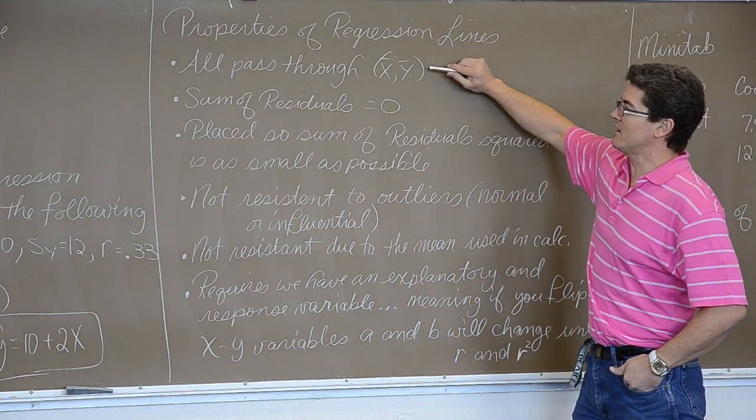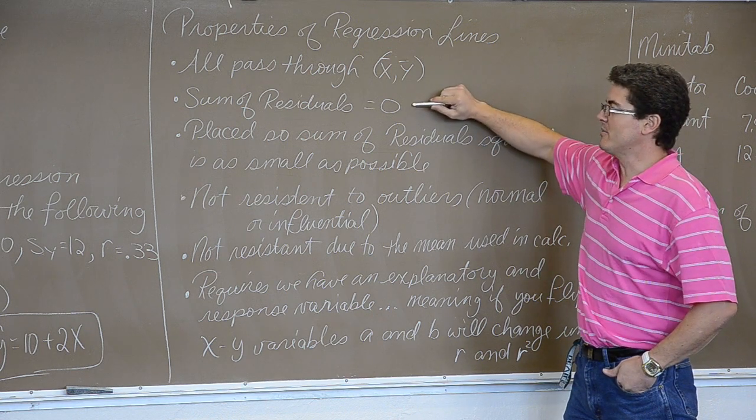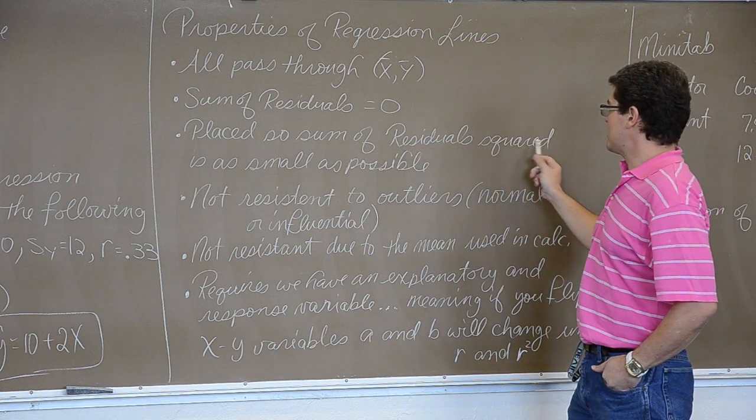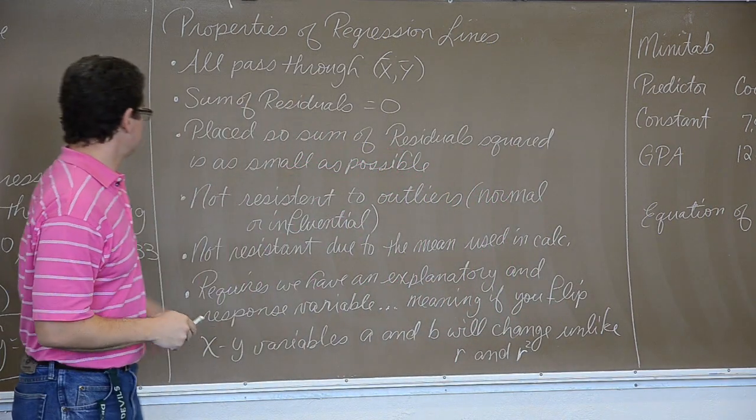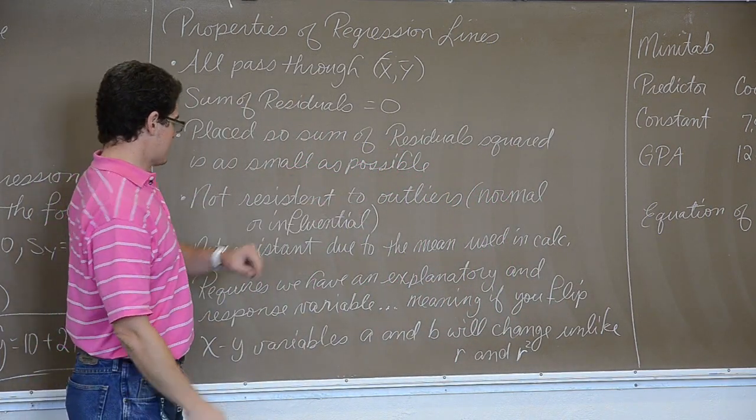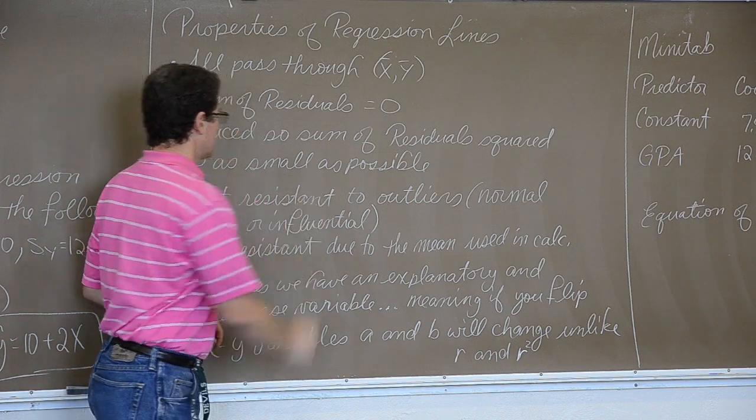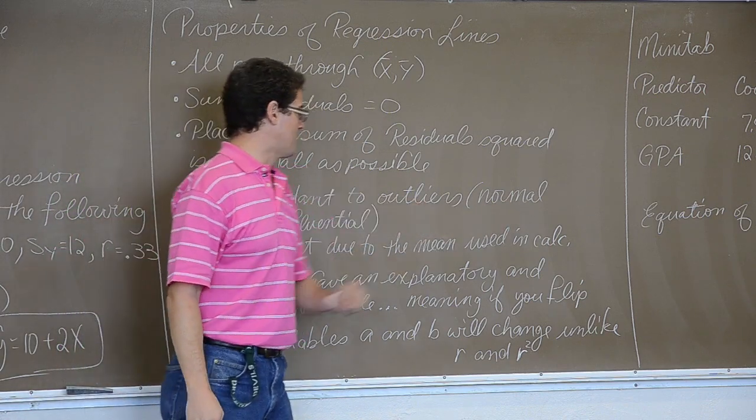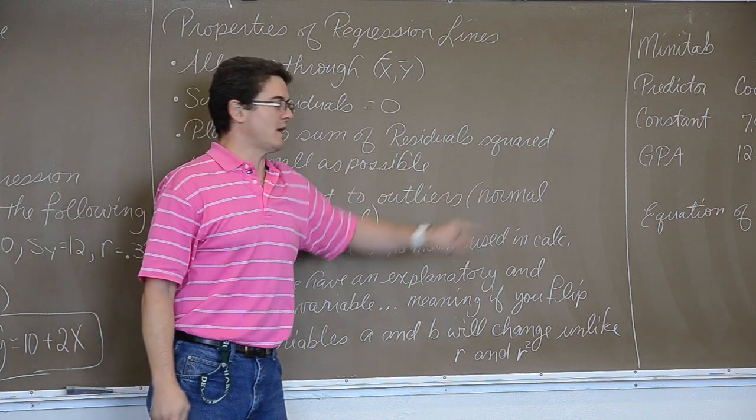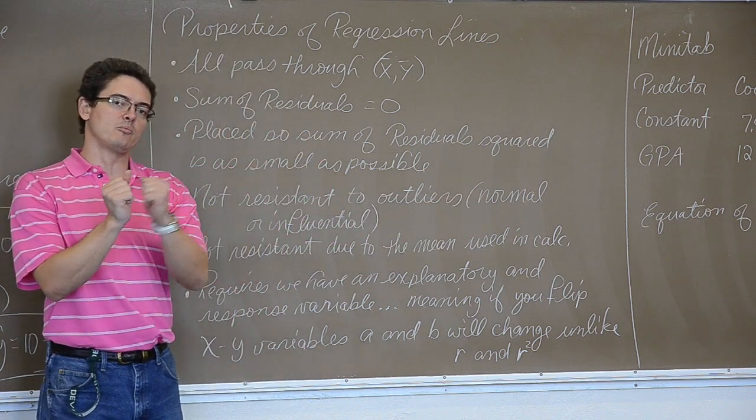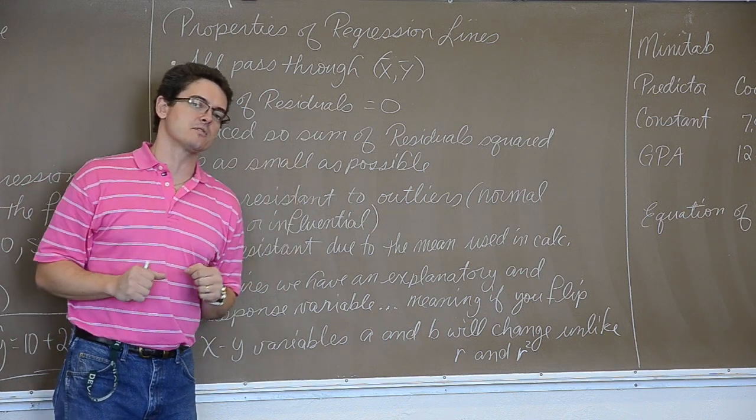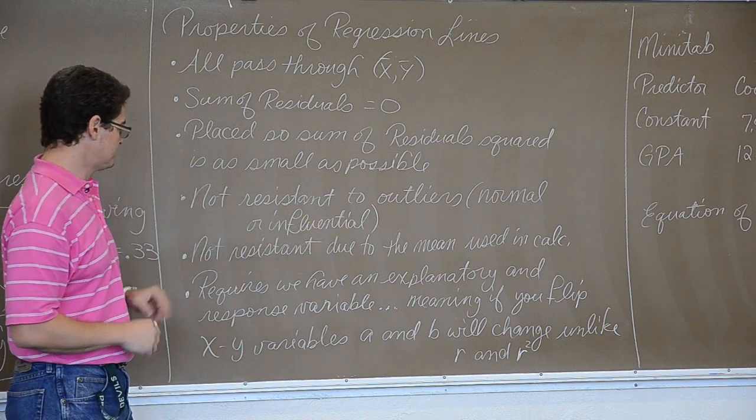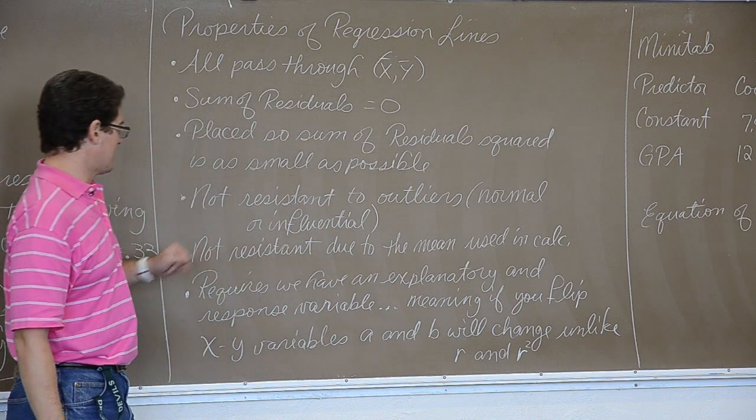Properties of regression lines, one more time, they all pass through the mean of x and mean of y. The sum of the residuals is always zero. Placed so the sum of the residuals squared is as small as possible. I just verbalized that over there. It is not a resistant measure. This is supposed to be an A I think. It is not a resistant measure because you are using the means in the calculation of a regression line. So it is not resistant to normal outliers or influential points. Remember, normal outliers are outliers in the vertical direction and influential points are outliers in the horizontal direction. And they have a lot more influence over the slope and the y intercept of the regression line. We don't want outliers ever. Influential ones are even worse. And this repeats what I just said. Regression lines are not resistant.